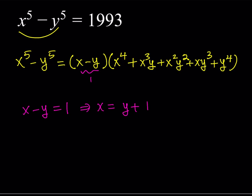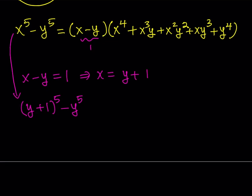We can substitute x equals y plus 1 into the original expression. This turns it into (y plus 1) to the fifth power minus y to the fifth power. We can use the binomial theorem and expand it. The coefficients for the fifth row of Pascal's triangle are 1, 5, 10, 10, 5, and 1.